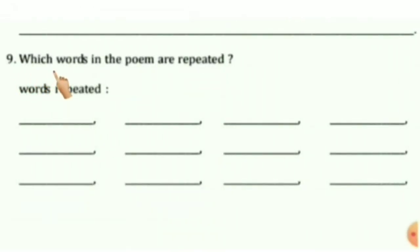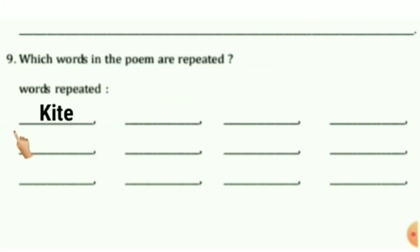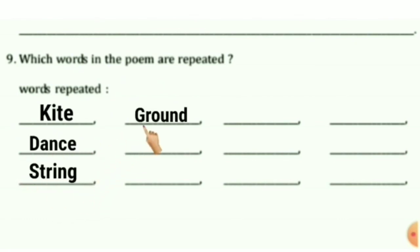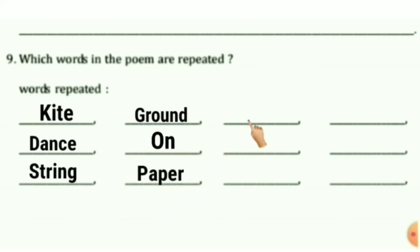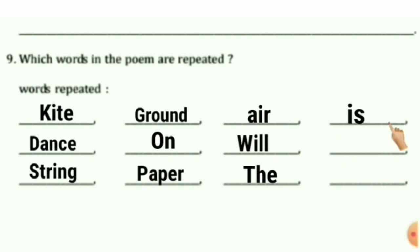Question 9: Which words in the poem are repeated? The repeated words in the poem are: Kite, Dance, String, Ground, On, Paper, Air, Will, The, Is, And, In.